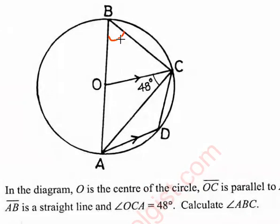Let's do this. If we are familiar with the circle theorems, you know that OC is a radius and OA is a radius. In other words, this distance is equal to this one. So if this is 48, then this angle here is also 48 degrees.